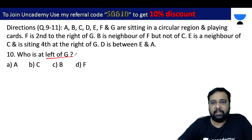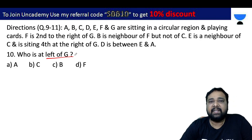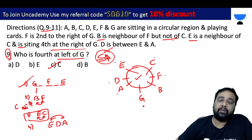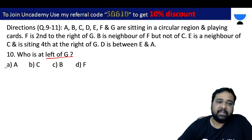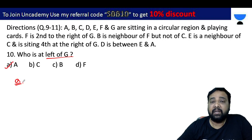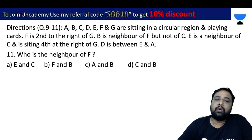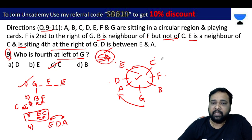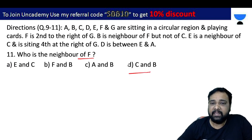Problem number 9: Who is at the immediate left of G? In circular arrangement, the word 'left' means immediate left, and 'right' means immediate right. The answer is A. Problem number 10: Who is the neighbor of F? The answer is C. Problem number 11: The answer is D.